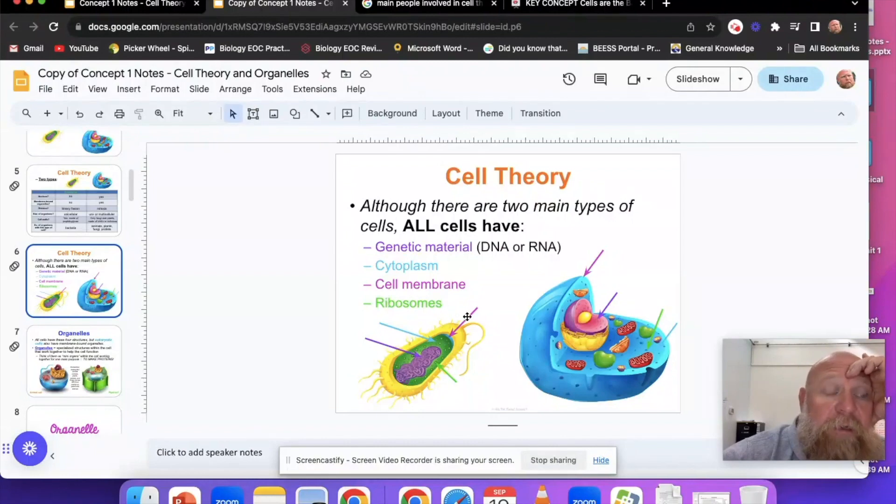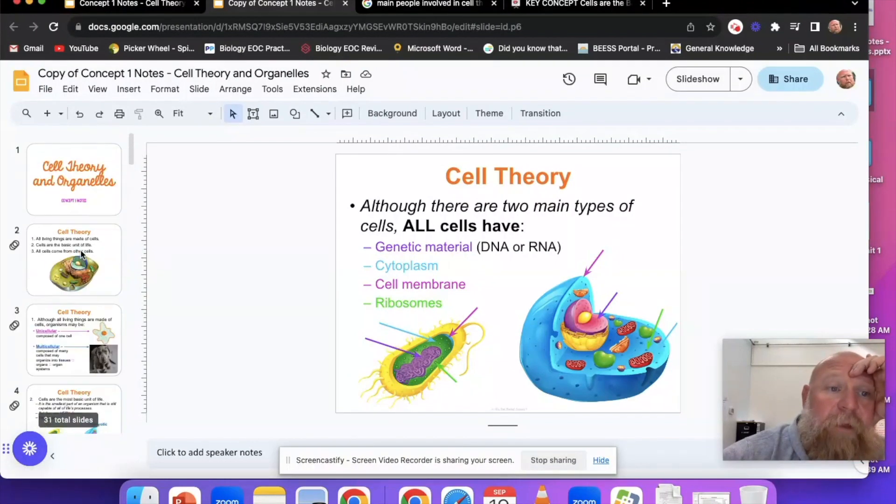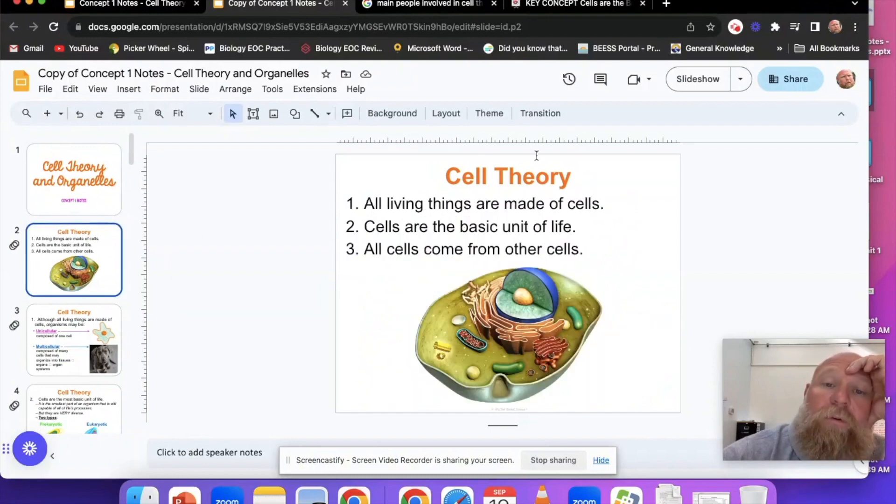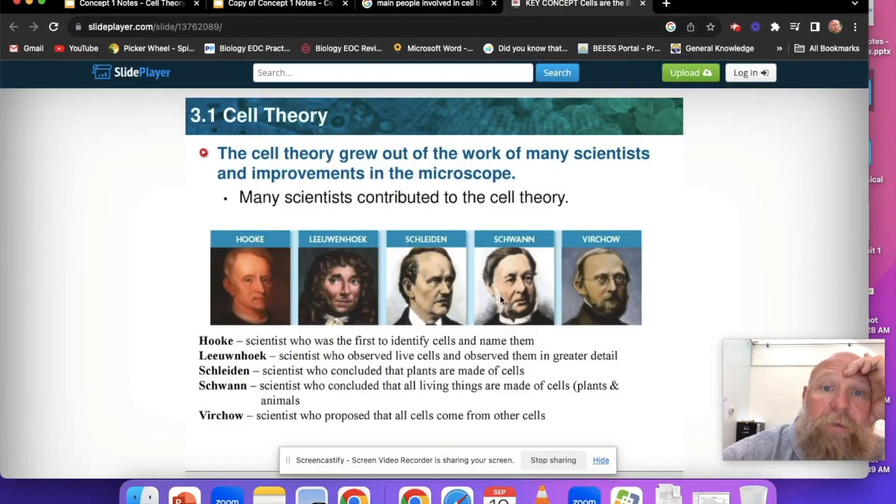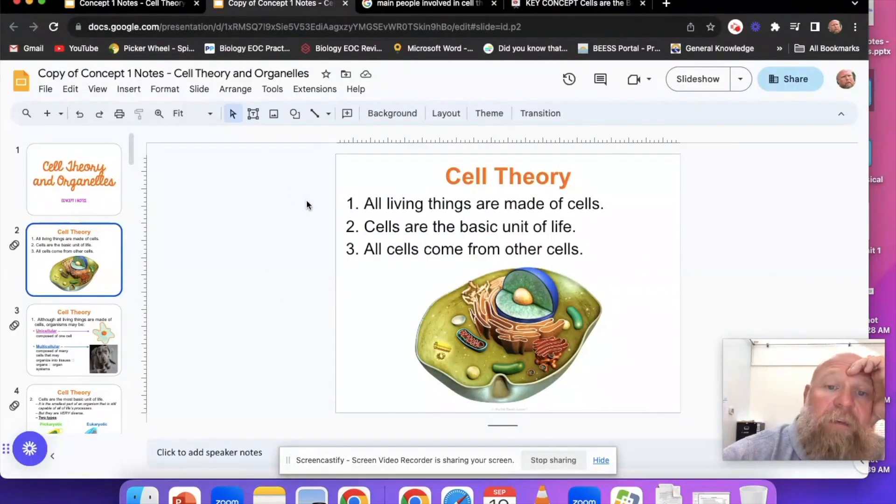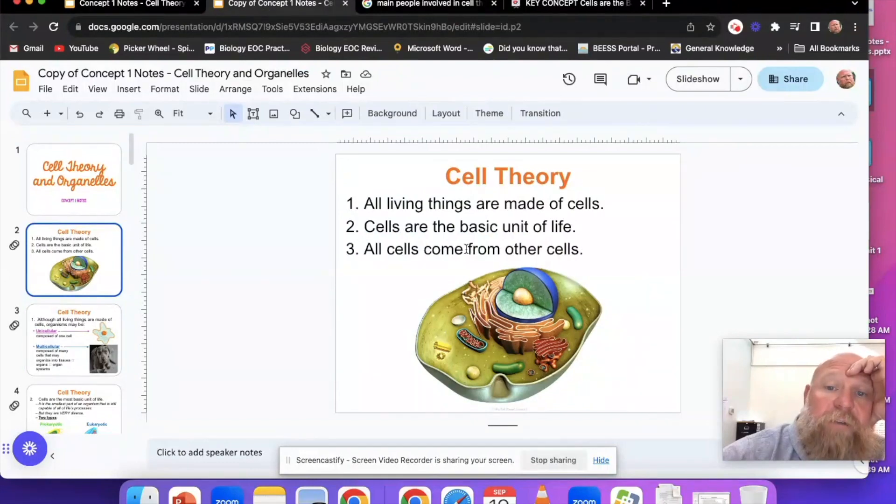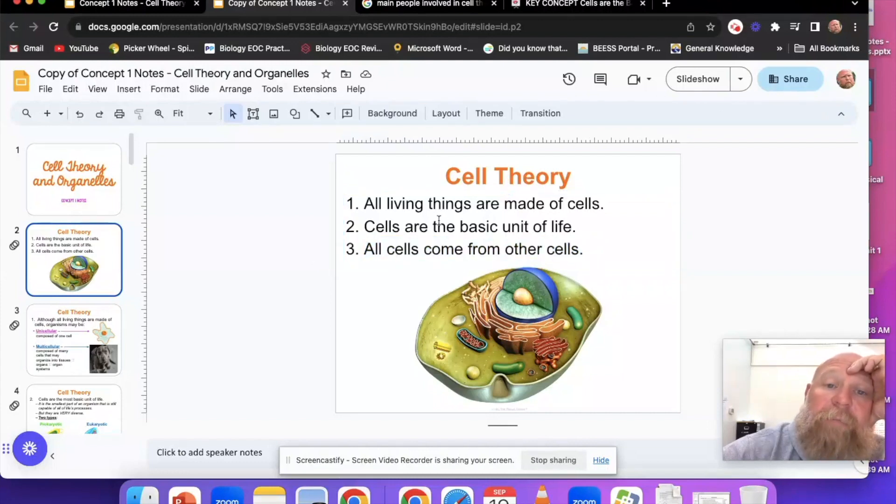Let's do a quick summary of cell theory. This whole theory was brought about by your people over here: Hook, Leeuwenhoek, Schleiden, Schwann, and Virchow. Each of these guys had a part to play in the development of cell theory. This one is obviously the most controversial: all cells come from other cells. This is cell theory in a nutshell: all living things are made of cells, cells are the basic unit of life, and all cells come from other cells.